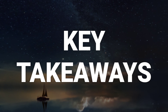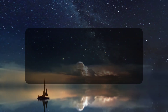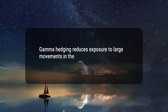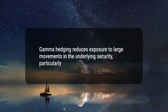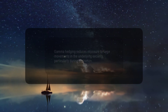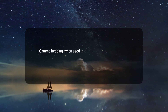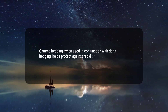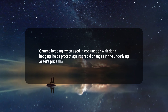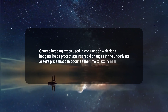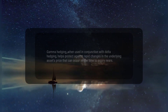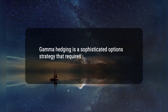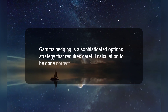Here are three key takeaways. First, gamma hedging reduces exposure to large movements in the underlying security, particularly during expiration. Second, gamma hedging, when used in conjunction with delta hedging, helps protect against rapid changes in the underlying asset's price that can occur as the time to expiry nears. Third, gamma hedging is a sophisticated option strategy that requires careful calculation to be done correctly.